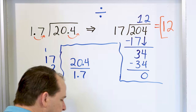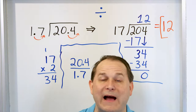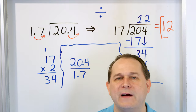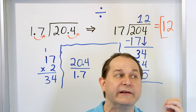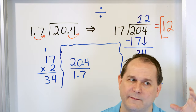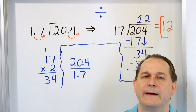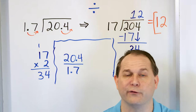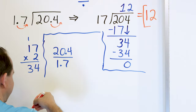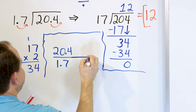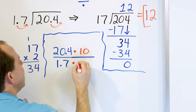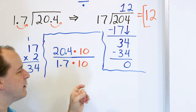Now remember, when we deal with fractions, we can multiply or divide the top and the bottom by any number we want — that's how we simplify fractions. We can divide the top by 2 and the bottom by 2, divide by 4 and 4, divide by 10 and 10. As long as we do it to both the top and the bottom, we have not changed the fraction. The same is true for multiplication — we can multiply a fraction by 2 or 3 or 4 as long as we do it to the top and bottom at the same time.